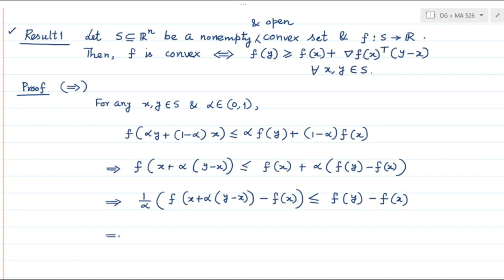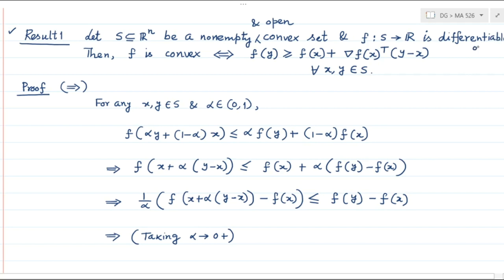Taking the limit as α → 0⁺, the left-hand side is the directional derivative of f at x along direction d = y − x. Since f is differentiable, this directional derivative equals ∇f(x)ᵀ(y − x), which is less than or equal to f(y) − f(x). Thus f(y) ≥ f(x) + ∇f(x)ᵀ(y − x), completing the forward part.